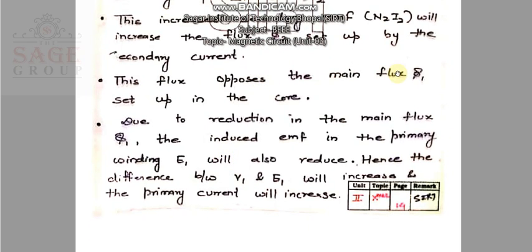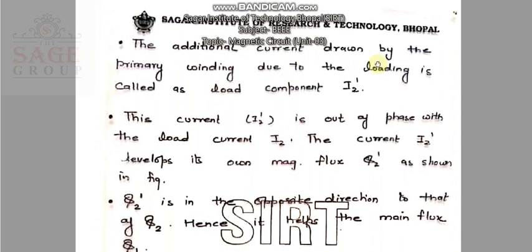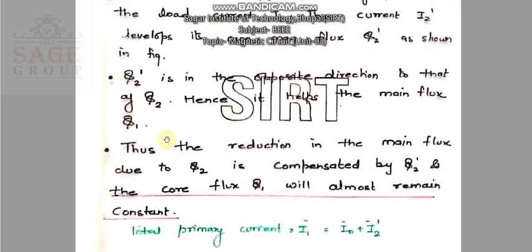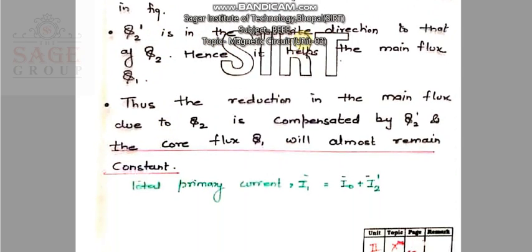This flux opposes the main flux phi 1 set up in the core. Due to the reduction in the main flux phi 1, the induced EMF in the primary winding E1 will also reduce. Hence the difference between V1 and E1 will increase, and the primary current will increase. The additional current drawn by the primary winding due to loading is called the load component, denoted by I2 dash. This I2 dash is out of phase with the load current I2, and its magnetic flux opposes phi 2.